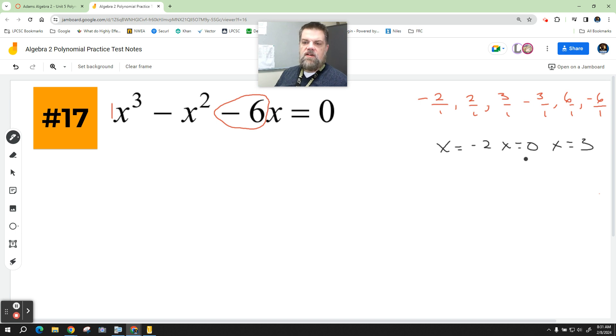So if I do the long division route, I'm going to pick 3. And remember, we're saying x cubed—we have to have a column for each one: x squared, x to the first, and x to the 0. That's 1, negative 1, negative 6, and then 0.